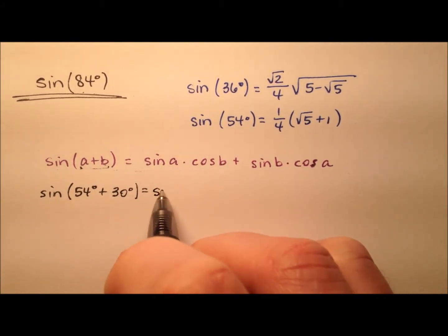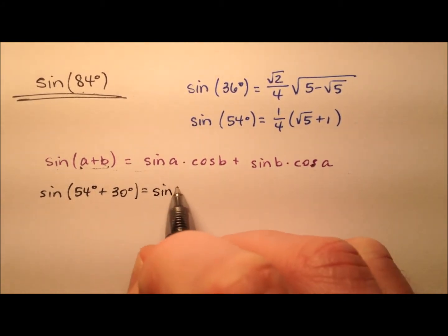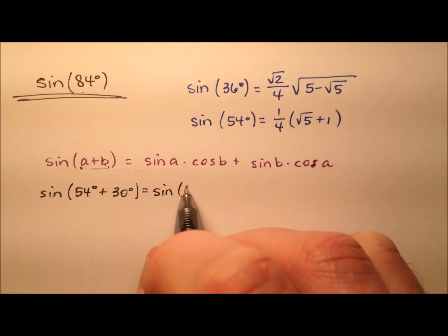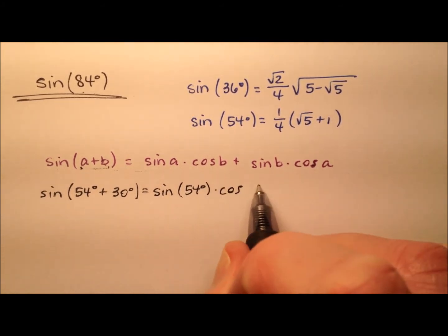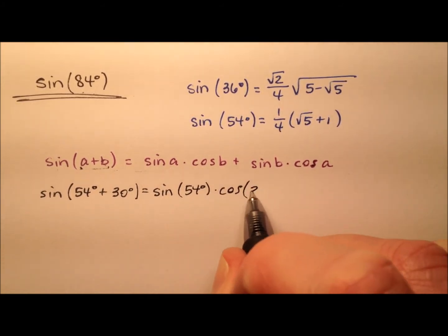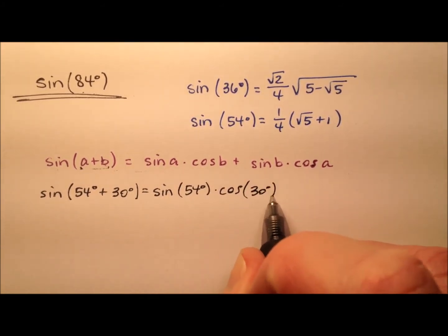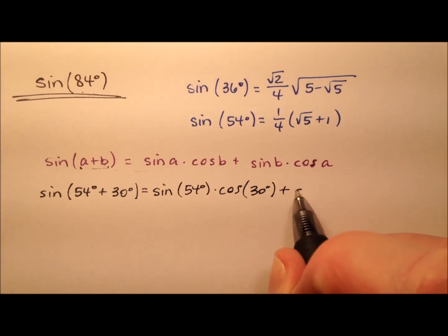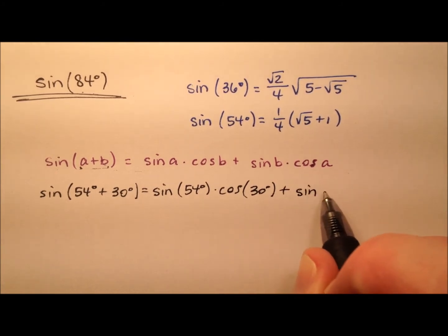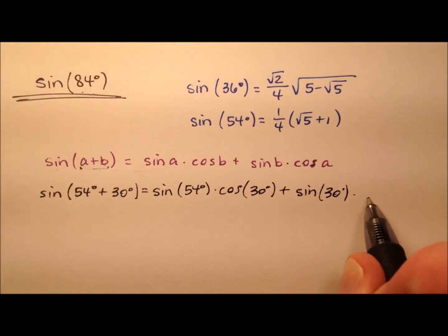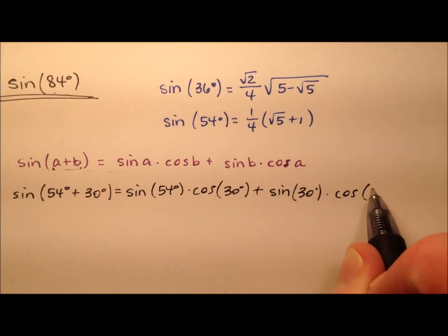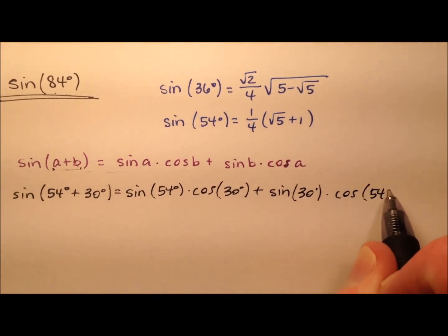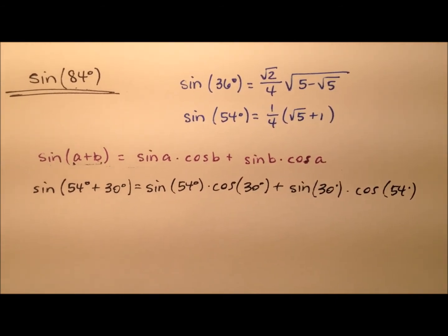Let's go ahead and write that out. So we have the sine of 54 degrees times the cosine of 30 degrees, plus the sine of 30 degrees times the cosine of 54 degrees.